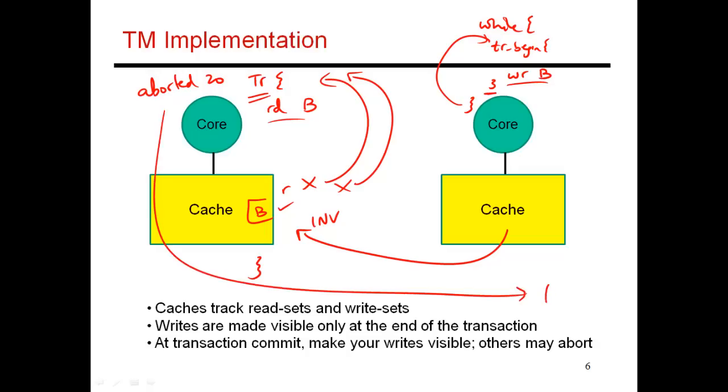So before I get to the end of the transaction, let me just contact the central arbiter. Let me get that token to commit. And this ensures that until I finish over here, nobody else can commit.